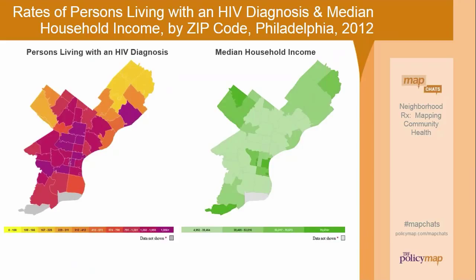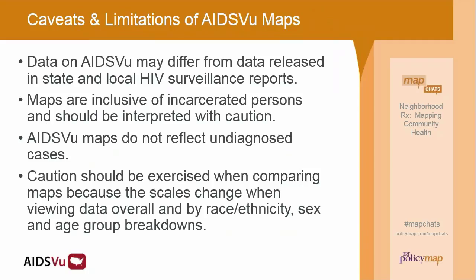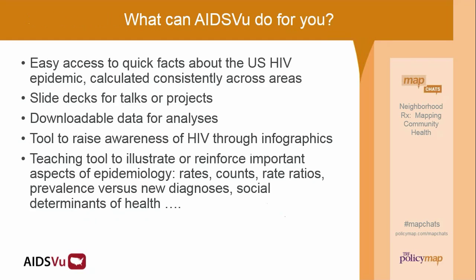Other important correlations speak to social determinants of health. Here is the same map of Philadelphia shown side-by-side with poverty rates. Within the darkest blue shaded areas, more than one in five people are living in poverty, and those overlap to a great extent with zip codes where the highest prevalence of people living with HIV is found. Similar measures are available for median household income. Note that the data come from national data sources at the county level, our maps include people who are incarcerated, they don't reflect undiagnosed cases, and scales change when we shift from maps by race/ethnicity to sex or age group breakdowns.